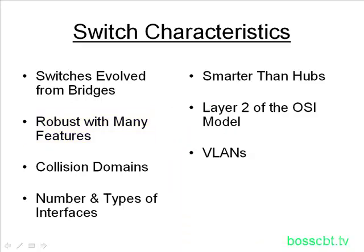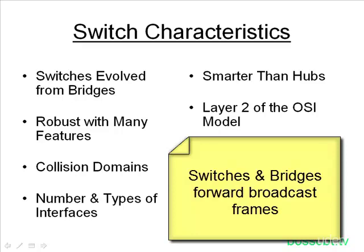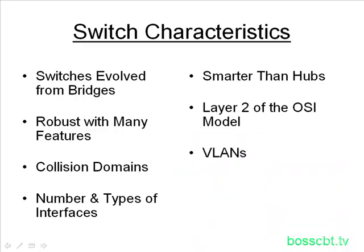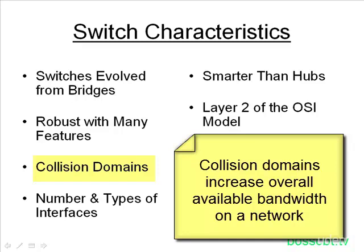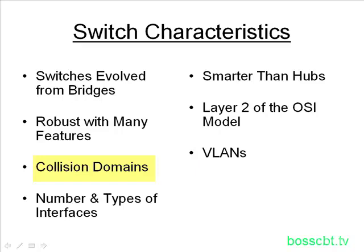Some similarities though: both switches and bridges forward layer two broadcasts, and both learn and forward frames similarly. When it comes to collision domains, switches and bridges are pretty similar — every port on a switch is its own collision domain. This increases the overall bandwidth of the network, because everyone's not sharing like you would on a hub, where all devices have to share that 10 megabits per second. Here, you have your own collision domain on each port.